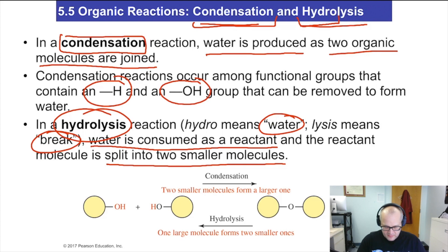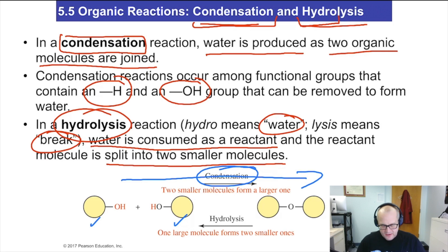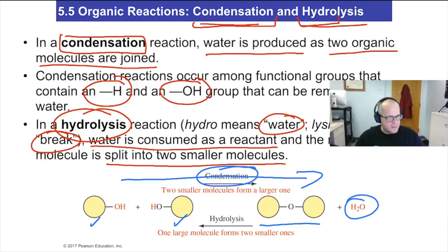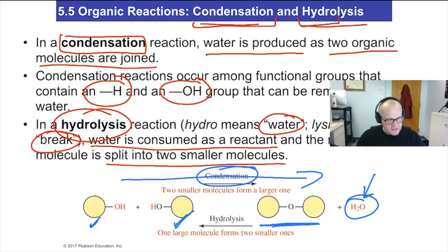Take a gander down here at these two. As we go from left to right, this is a condensation reaction. We have two molecules on the left, one molecule on the right, and the formation of water. This joins with this, making a larger molecule, and as a byproduct, water. That's a condensation reaction — it made water.